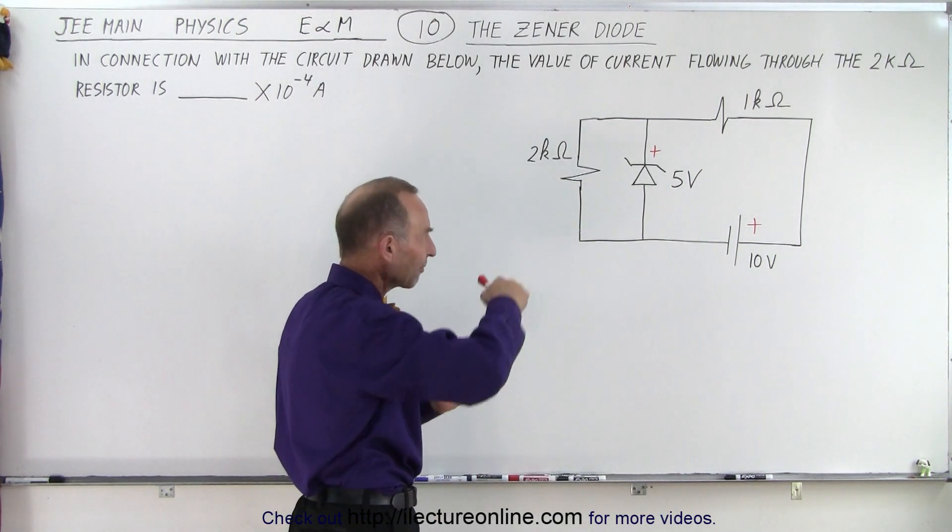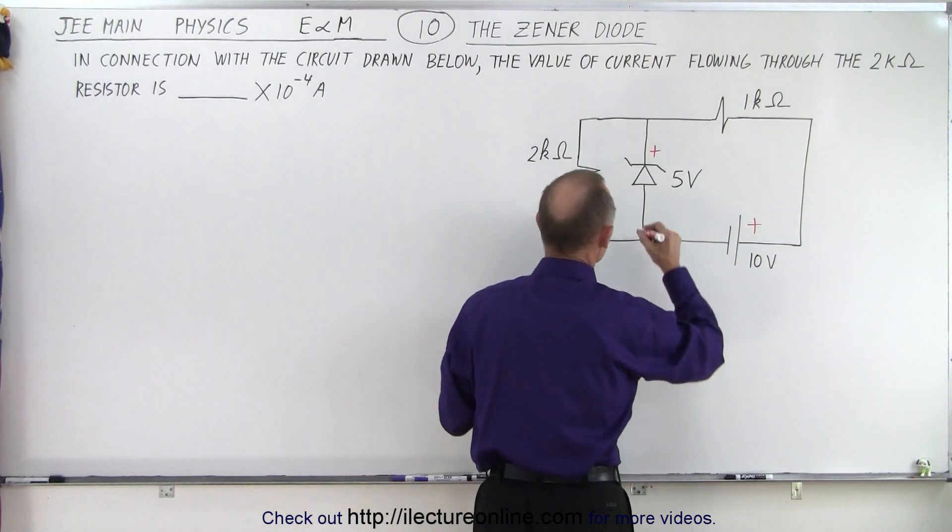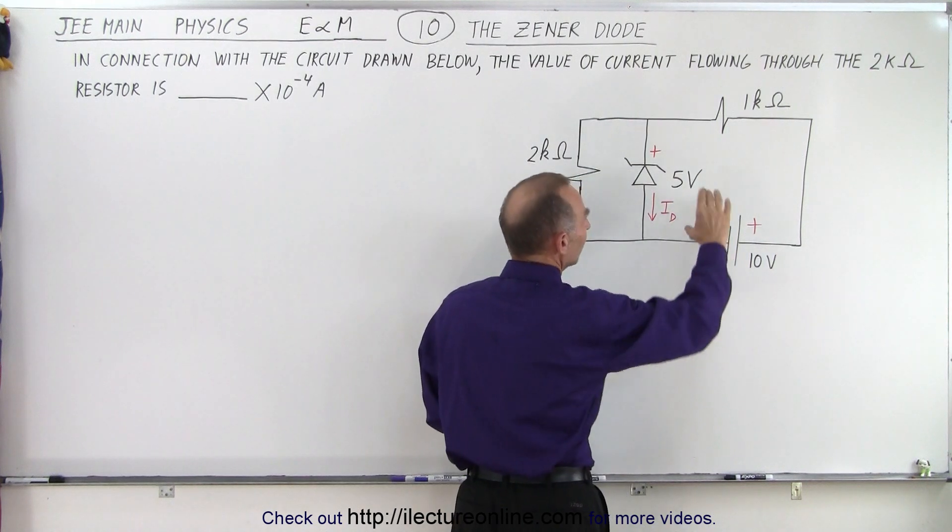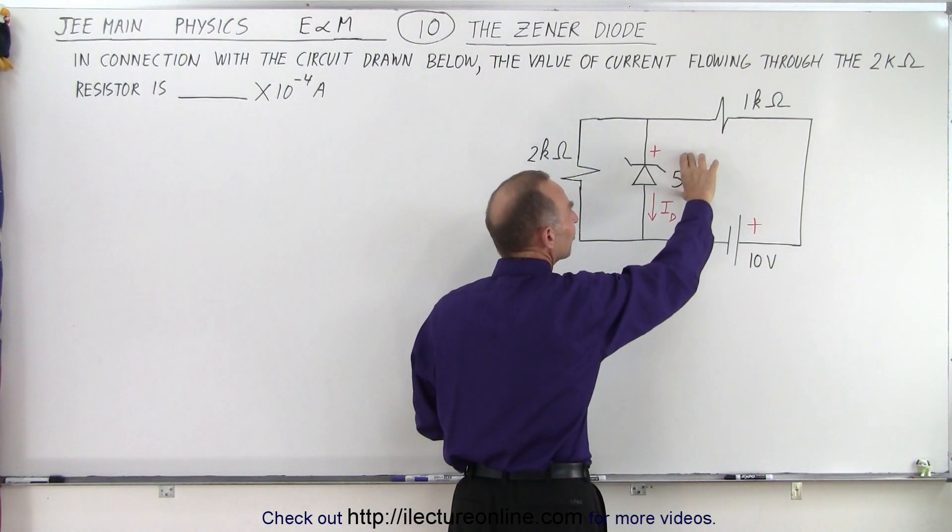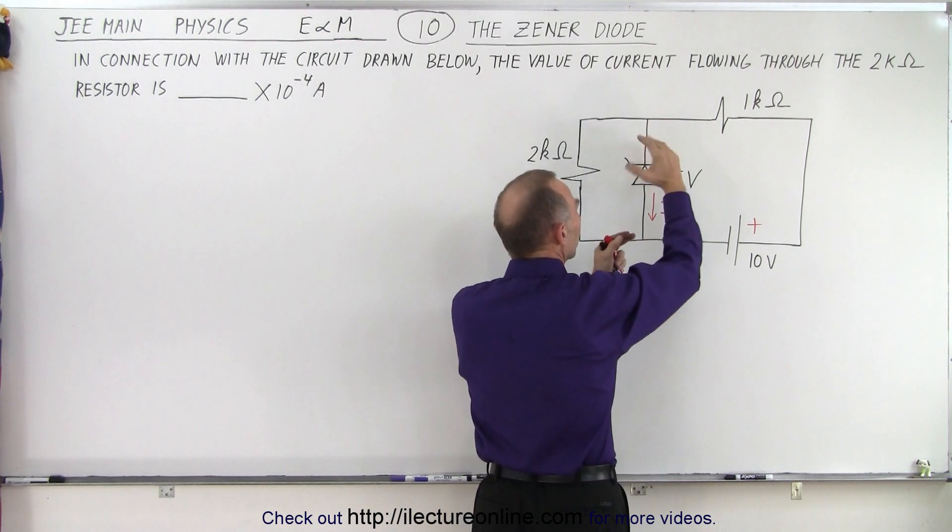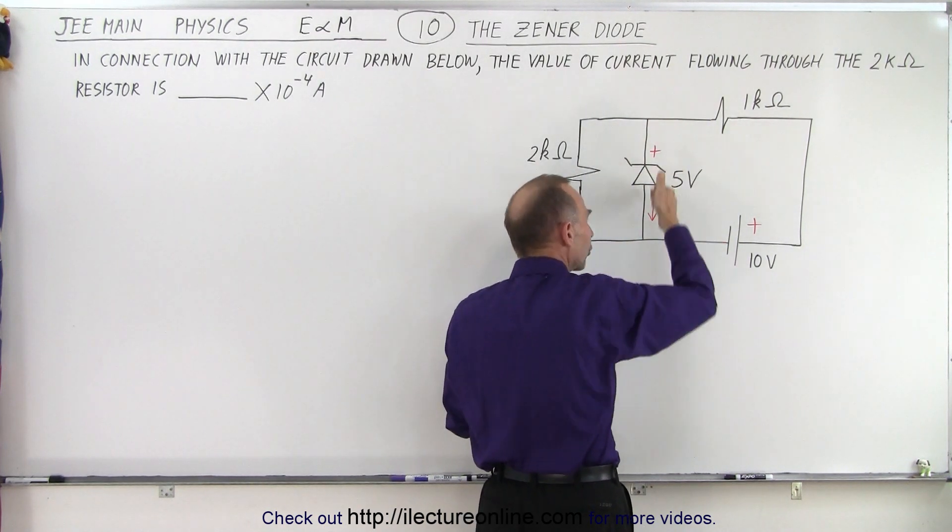Notice then that will drive current through the Zener diode in this direction—there will be some current I_D in this direction. Notice that this Zener diode is rated at 5 volts, so that means you have to have a 5 volt build up across this Zener diode for the current to flow.